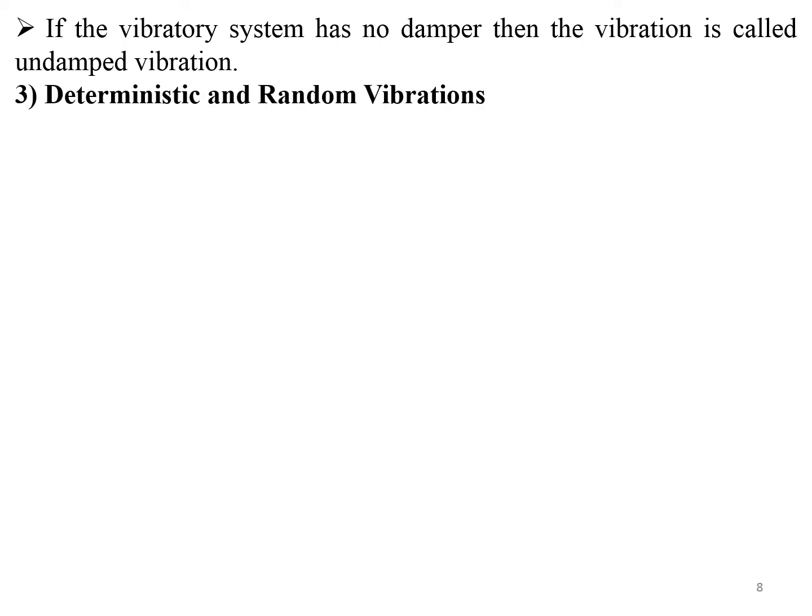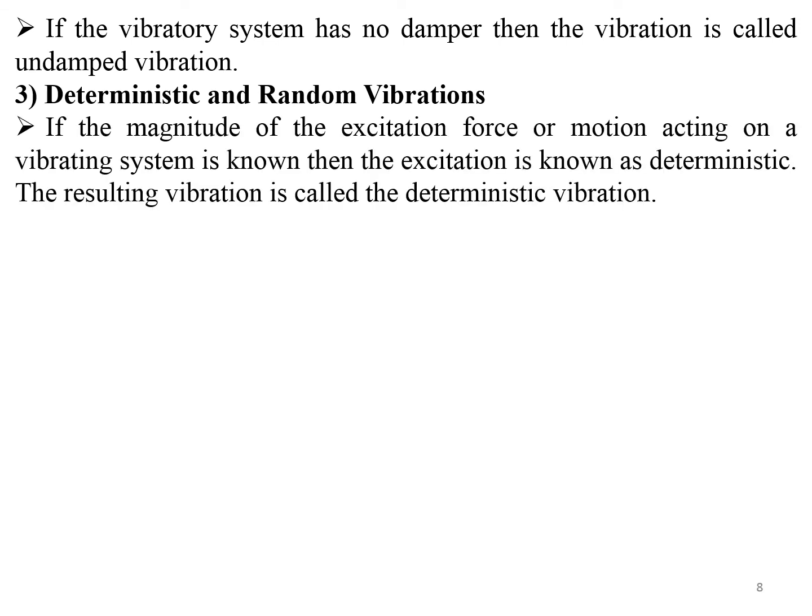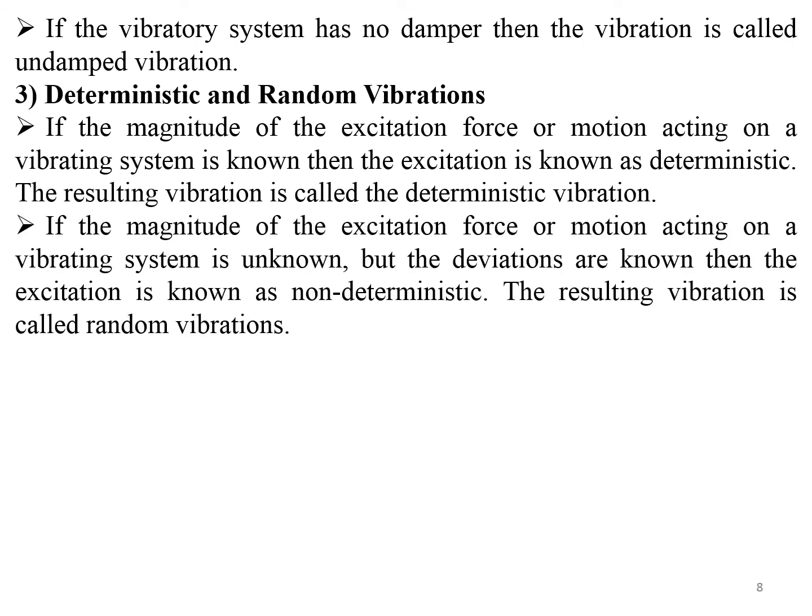Deterministic and random vibrations: if the magnitude of the excitation force or motion acting on a vibratory system is known, then the excitation is deterministic and the resulting vibration is called deterministic vibration. If the magnitude is not known but the statistical deviations are known, then the excitations are non-deterministic, and the resulting vibrations are called random vibrations.